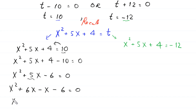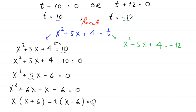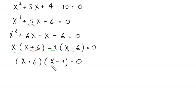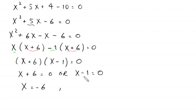We split 5x as +6x−x, giving x²+6x−x−6 = 0. Factoring: from the first two terms we factor out x, giving x(x+6); from the last two terms we factor out −1, giving −1(x+6). So (x+6)(x−1) = 0.